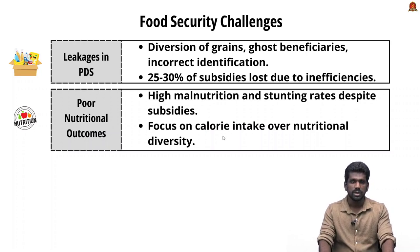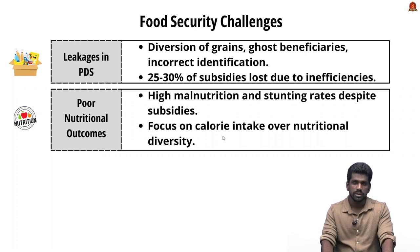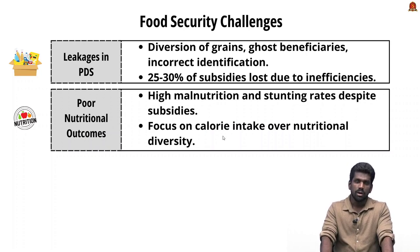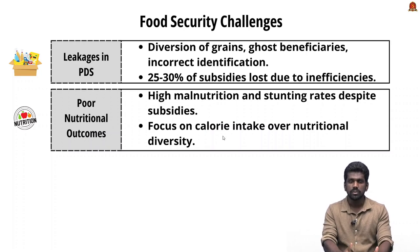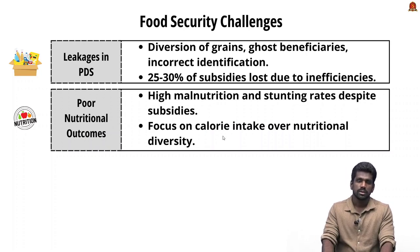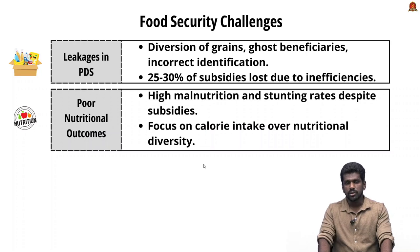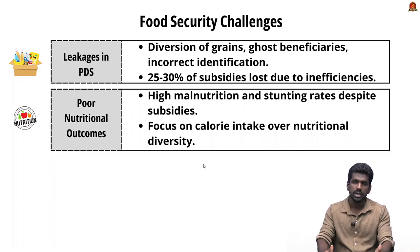There are significant inefficiencies in India's food security system — diversion of food grains, ghost beneficiaries, and incorrect identification of the poor mean that around 25 to 30 percent of food subsidies are lost. Despite food subsidy schemes, malnutrition and stunting rates remain very high in India. The NFSA currently covers 67 percent of the population based on outdated poverty estimates, leading to both exclusion errors (eligible people not covered) and inclusion errors (non-needy people receiving assistance).